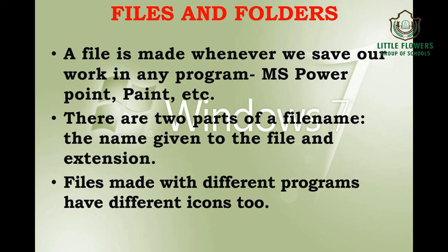A file is made whenever we save any work in any program — for example, PowerPoint or Paint. There are two parts of a file name: the name given to the file and its extension. Files made with different programs have different icons and different extensions. For example, a Word file has the extension .doc or .docx, and a PowerPoint file has the extension .ppt. Files and folders on a computer can be managed by a program known as Windows Explorer.